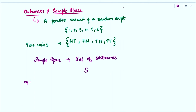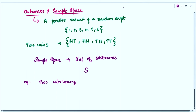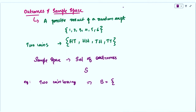For example, in a two-coin tossing experiment, we have the sample space S = {HH, HT, TH, TT}. This set is called the sample space of the outcome, and each element is called a sample point.